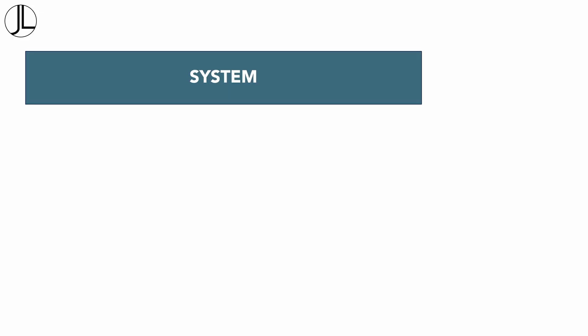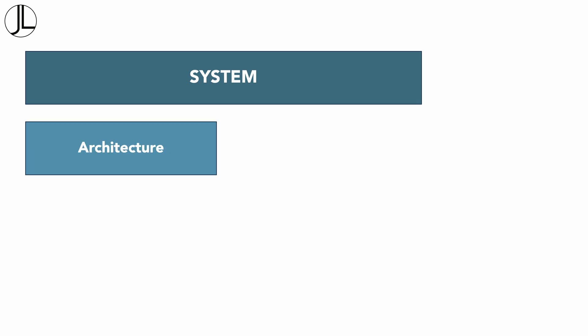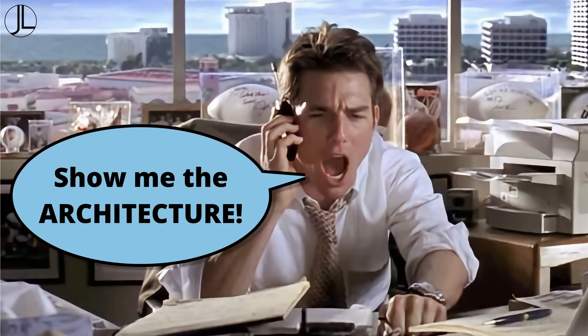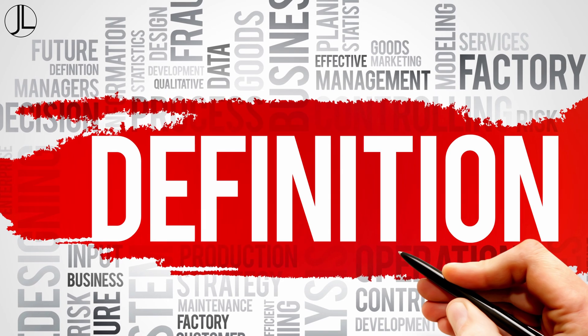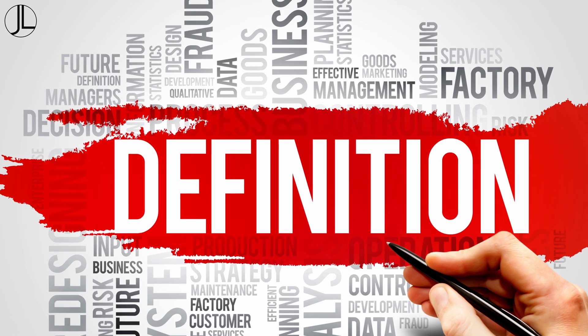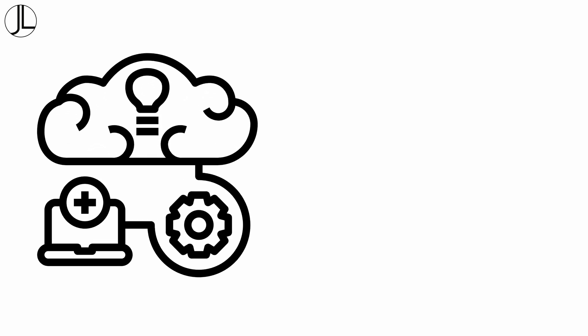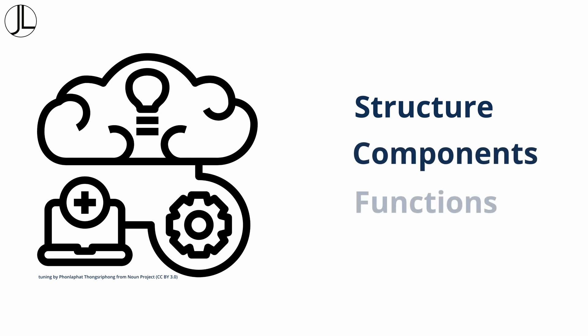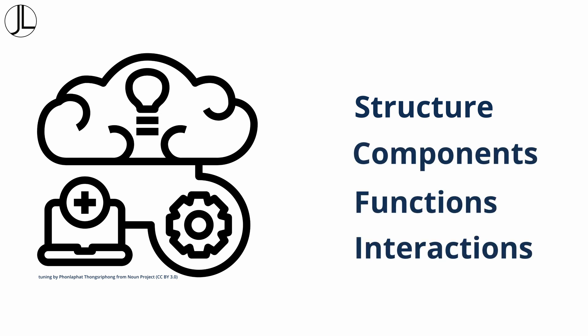Let's unpack the different terms used to describe a system, starting with architecture. I'm an enterprise architect, and like many architects and non-architects, I like using the word architecture. But architecture means something specific. An architecture defines the structure, components, functions, and interactions of a system.